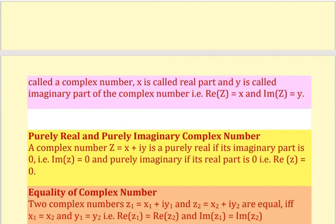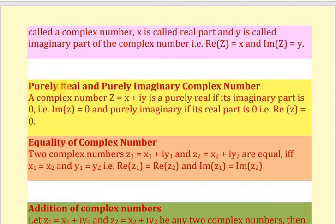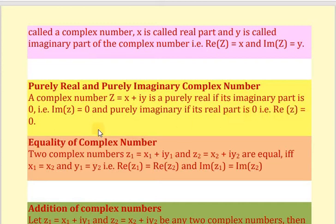Now, what is a purely real and purely imaginary complex number? A complex number z equals x plus iy is called purely real if its imaginary part is zero, that is Im(z) equals 0. And it is called purely imaginary if its real part is zero, that is Re(z) equals 0.